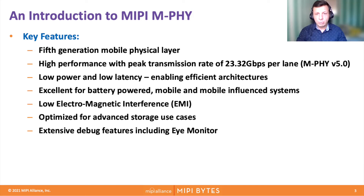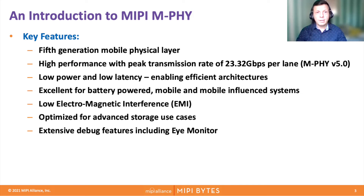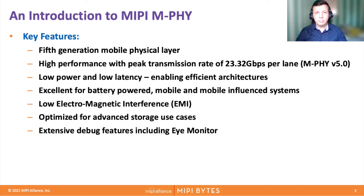Amphi is excellent for battery-powered systems, mobile, and mobile-influenced systems. It has low EMI — the ability not to interfere with Wi-Fi frequencies inside the phone or with other frequencies used for RF communication. It is optimized for advanced storage with specific storage features introduced in Amphi version 5, which will make the storage use case more efficient. It also has extensive debug features, for example, an eye monitor that allows visual inspection of signal quality during normal operation.